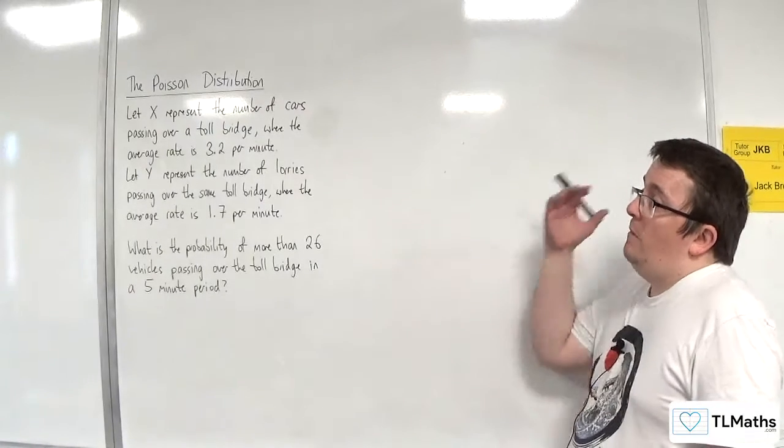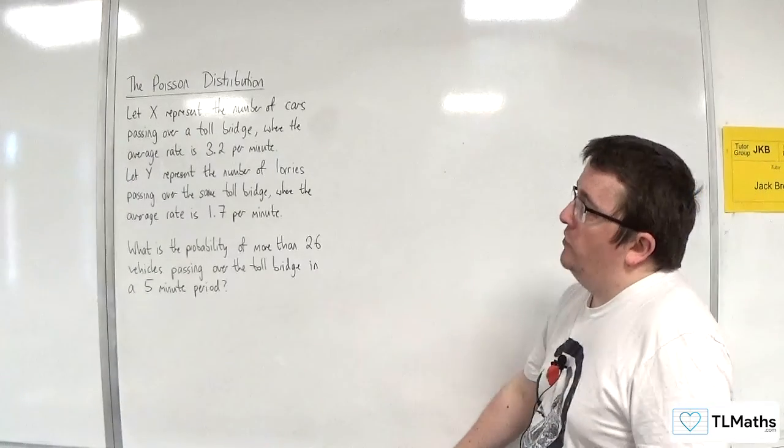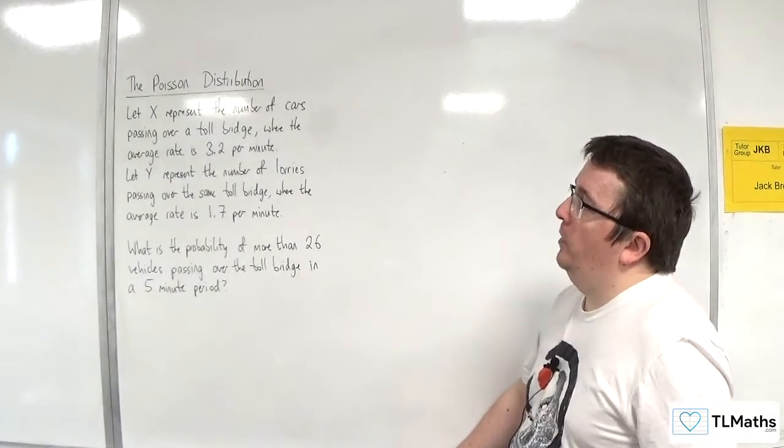So in this video, let X represent the number of cars passing over a toll bridge, where the average rate is 3.2 per minute.